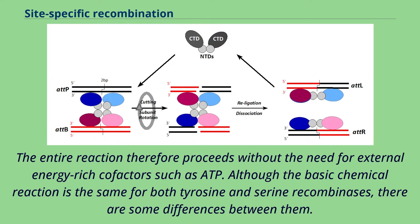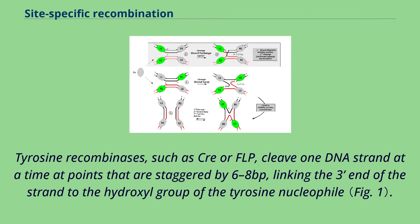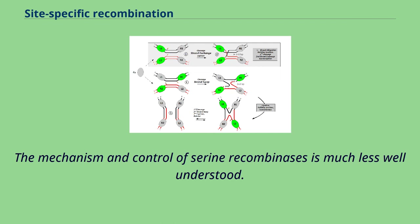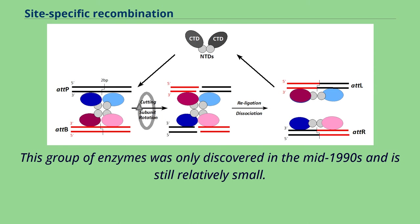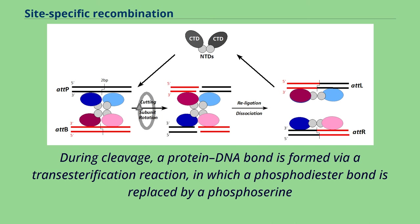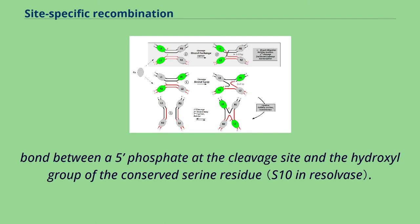Although the basic chemical reaction is the same for both tyrosine and serine recombinases, there are some differences between them. Tyrosine recombinases, such as CRE or FLP, cleave one DNA strand at a time at points that are staggered by 6–8 BP, linking the 3-end of the strand to the hydroxyl group of the tyrosine nucleophile. Strand exchange then proceeds via a cross-strand intermediate analogous to the Holliday junction in which only one pair of strands has been exchanged. The mechanism and control of serine recombinases is much less well understood. This group of enzymes was only discovered in the mid-1990s and is still relatively small. The now classical members gamma-delta and TN3 resolvase, but also new additions like phi-C31, BXB1, and R4 integrases, cut all four DNA strands simultaneously at points that are staggered by 2 BP. During cleavage, a protein-DNA bond is formed via a transesterification reaction, in which a phosphodiester bond is replaced by a phosphoserine bond between a 5-phosphate at the cleavage site and the hydroxyl group of the conserved serine residue.